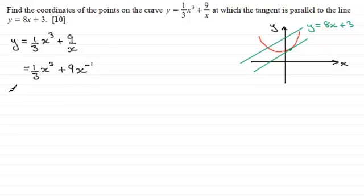And so to differentiate this to get the gradient at any point on the curve, differentiating with respect to x gives us 3 times one-third which is 1. Reduce the power on the x by 1 so you're just left with x squared. For this term, minus 1 times 9 gives us minus 9. Reduce the power on x to the power minus 2.